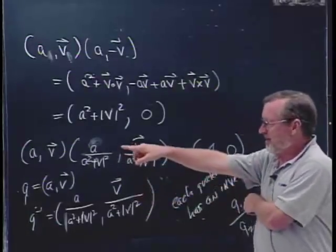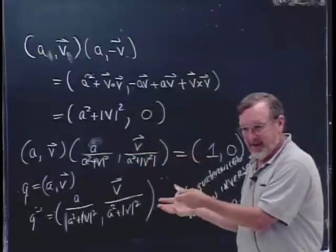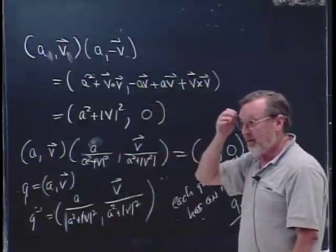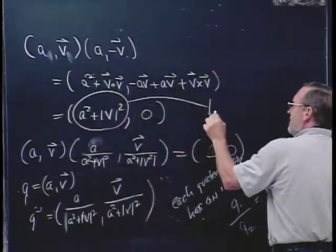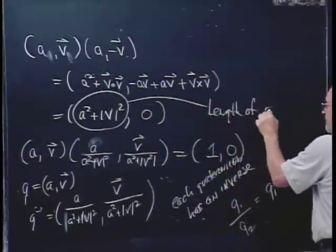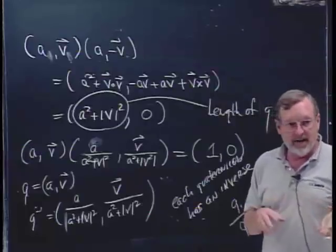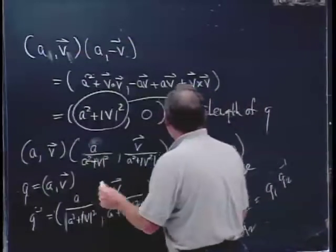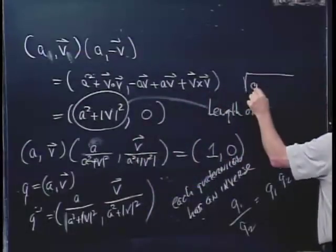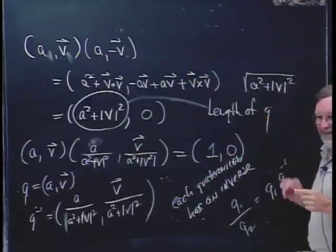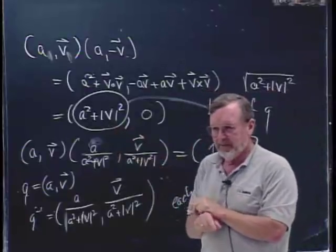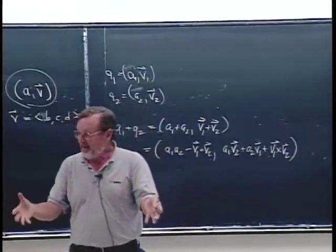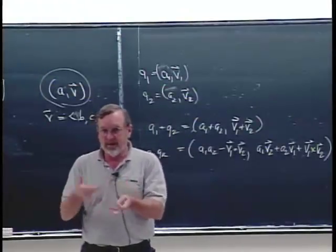These are kind of cool because you can add them, subtract them, multiply them, and divide them — everything you'd normally want to do with numbers. The square root of A² + |V|² is normally called the length of Q. Everything about them is really cool, and this is why people love them so much.